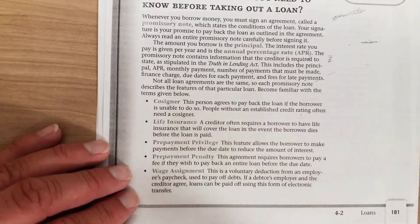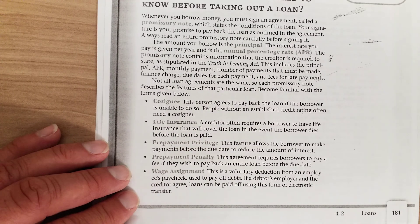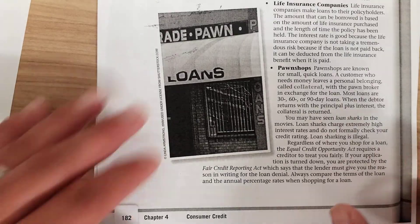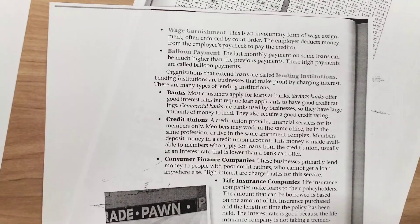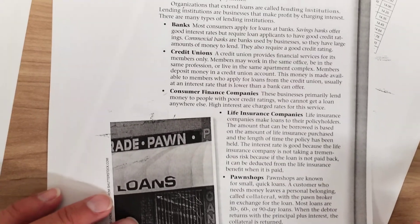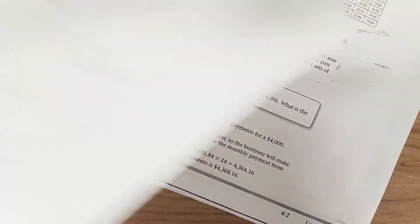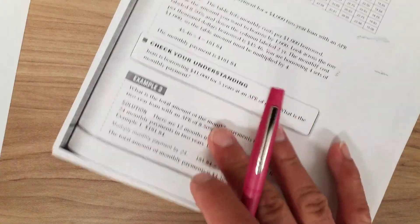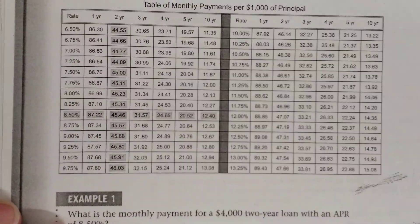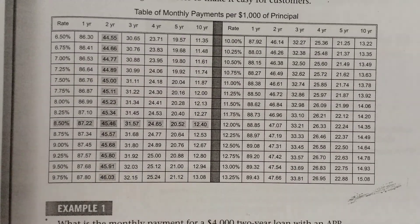These are some other things you would probably need to read through before you take out a loan, along with the other part of the reading assignment. There are different types of lending institutions. Now we're going to talk about what kind of payments you would make based on how much you borrow.